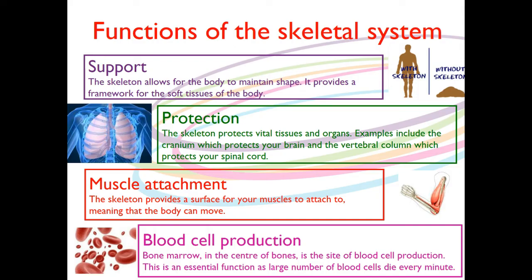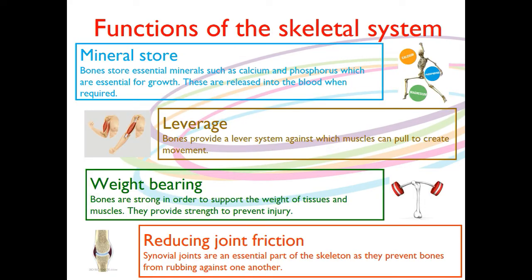The fifth one is mineral storage. Bones store essential minerals such as calcium and phosphorus, which are essential for growth. They're then released into the blood when required. We've got these big calcium deposits in our bones, held there for when we need them to be released into the blood.